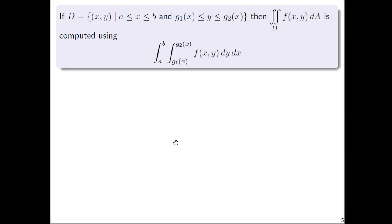So if you have a new region D here with x going from a to b, a and b are constants, and y going between two functions of x, g sub one of x to g sub two of x, then the double integral over this new region D, not a rectangle, it doesn't have to be a rectangle anyway,